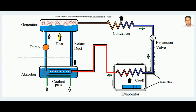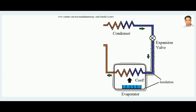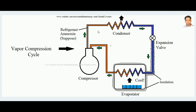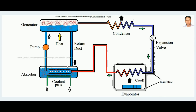By the help of a pump, this aqua ammonia strong solution is sent to the generator. In the generator, heat is supplied, so the ammonia is liberated from the water and collects at the top with high pressure. This accomplishes the job of the compressor — taking ammonia at low pressure and delivering it at high pressure — using heat rather than mechanical compression.